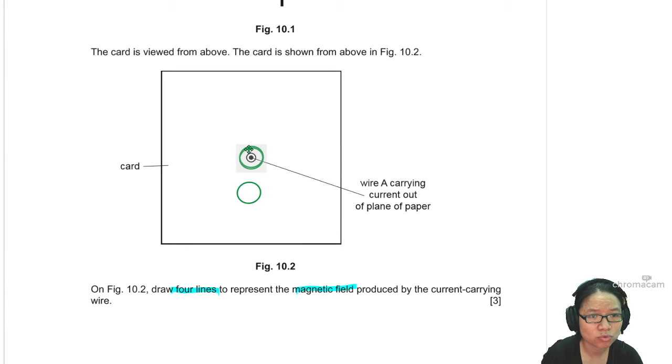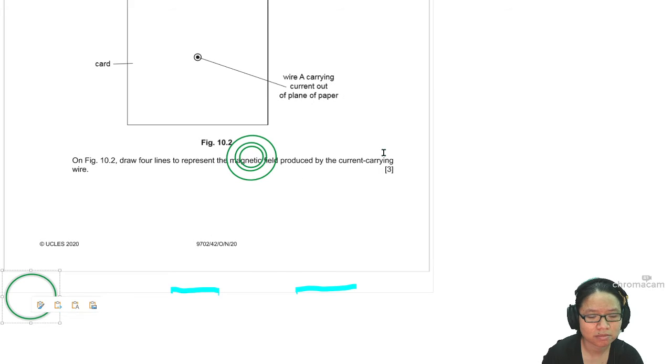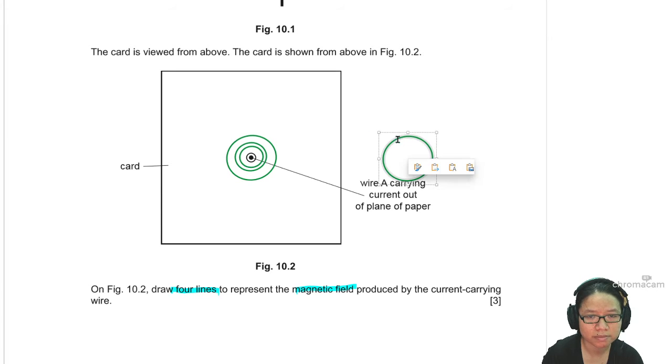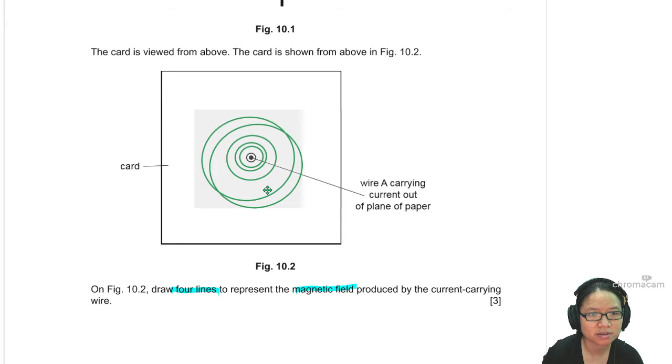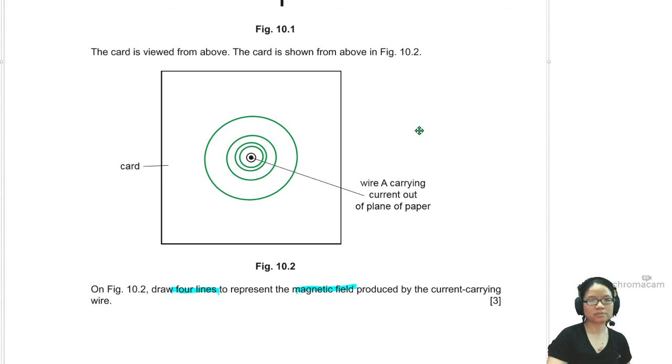Number two, their separation is important. When it's close to the wire, the separation is close. But as you travel further and further away from the wire, the separation will be further. So it will be concentric circles where the separation is gradually bigger and bigger.